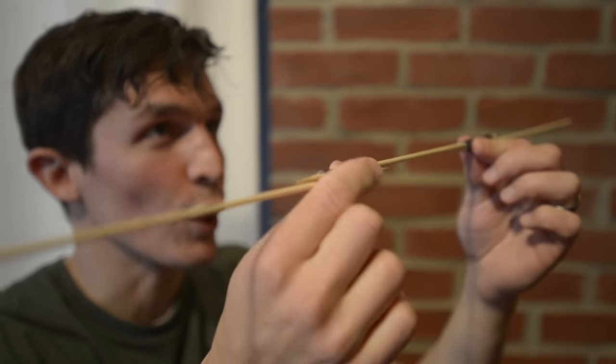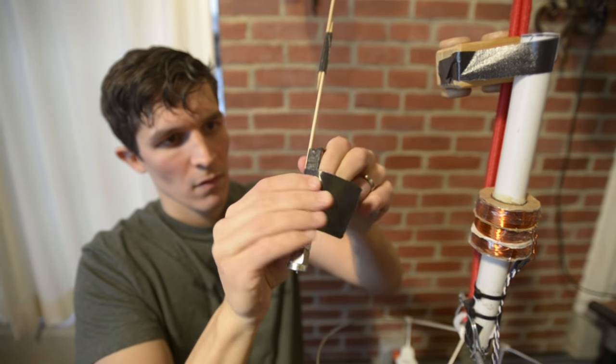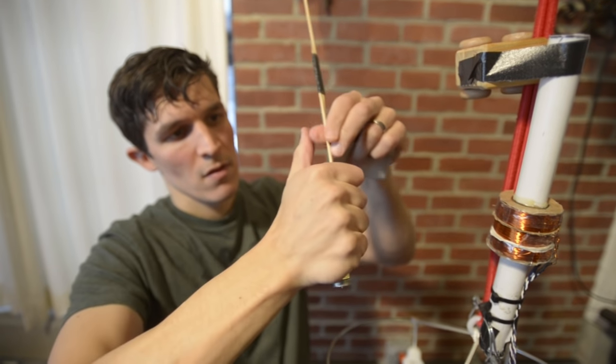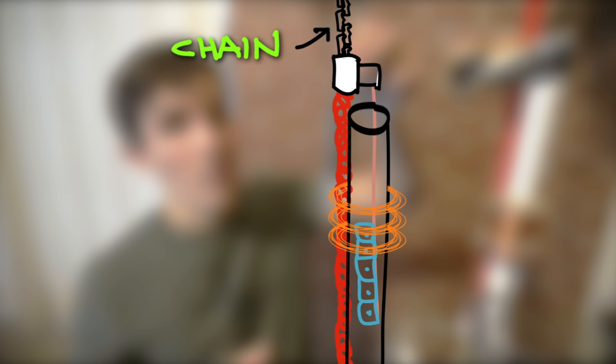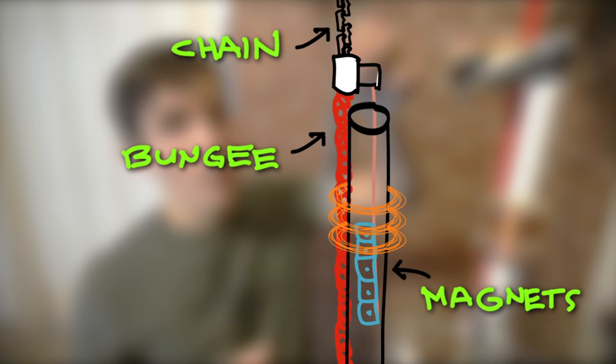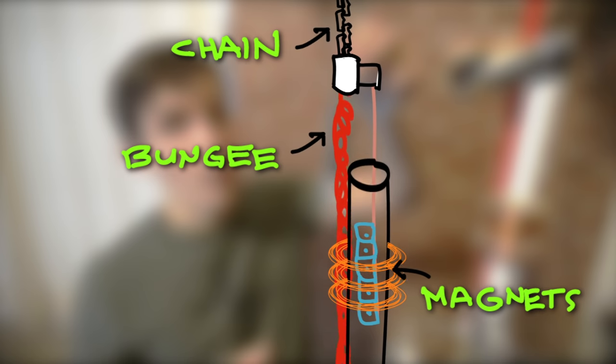Three barbecue skewers. I'm gonna tape the magnets on one end. The skewer is mounted to the chain above the bungee cord part of the jumper, so the magnets remain stationary while the tube moves with the jumper.